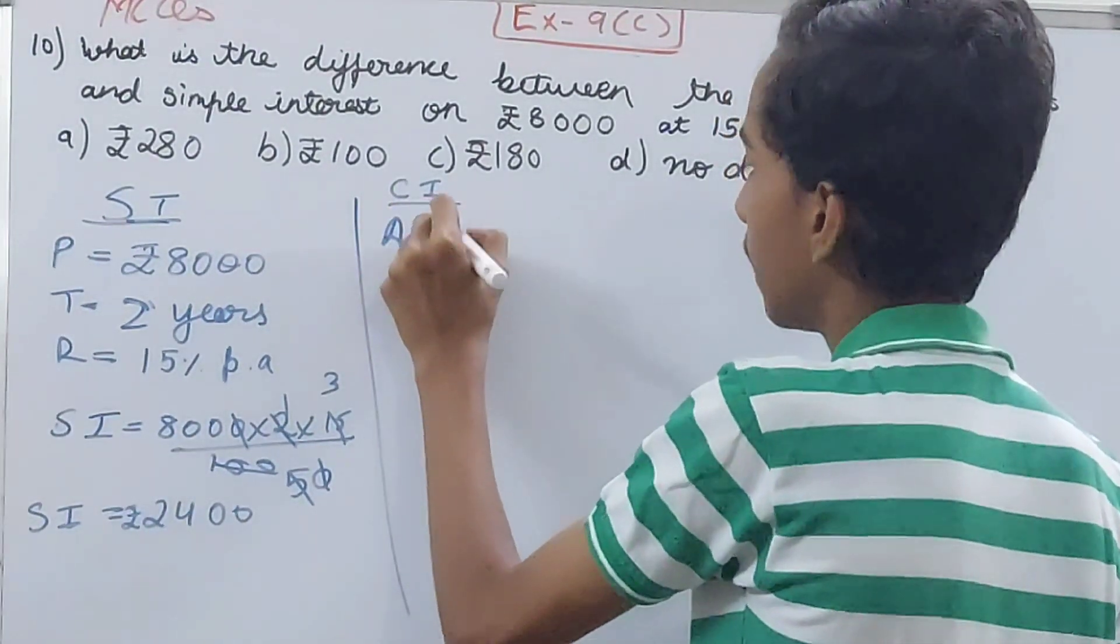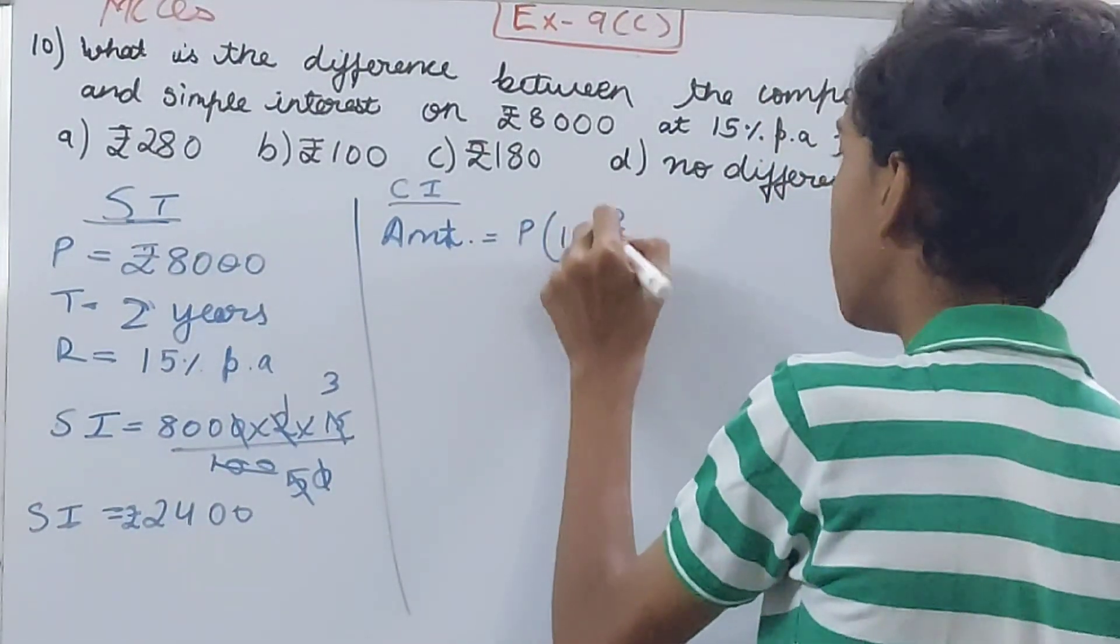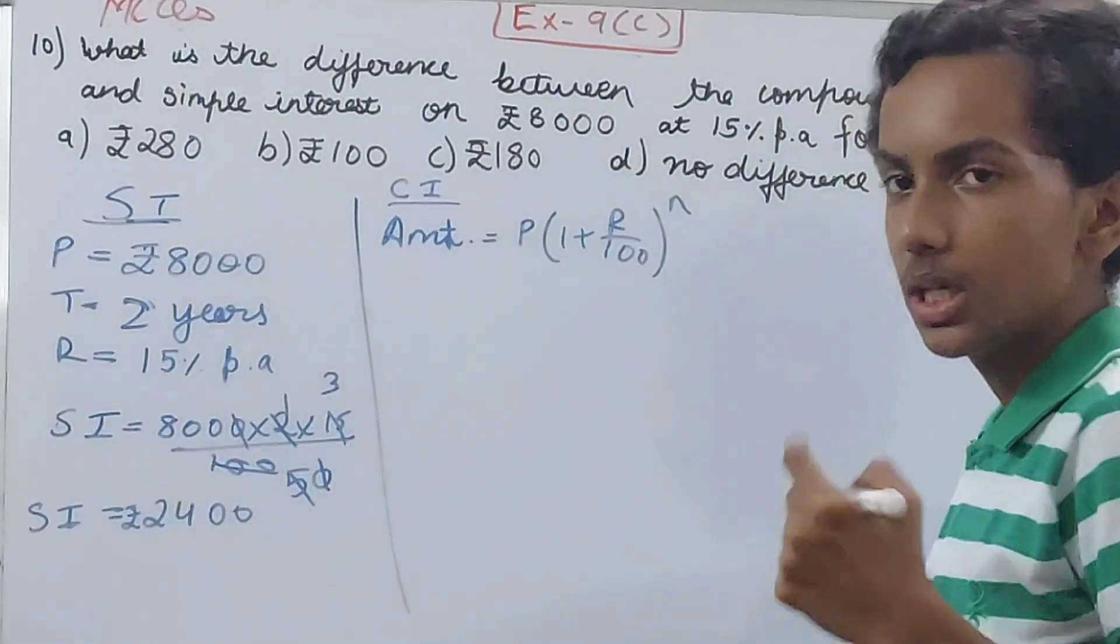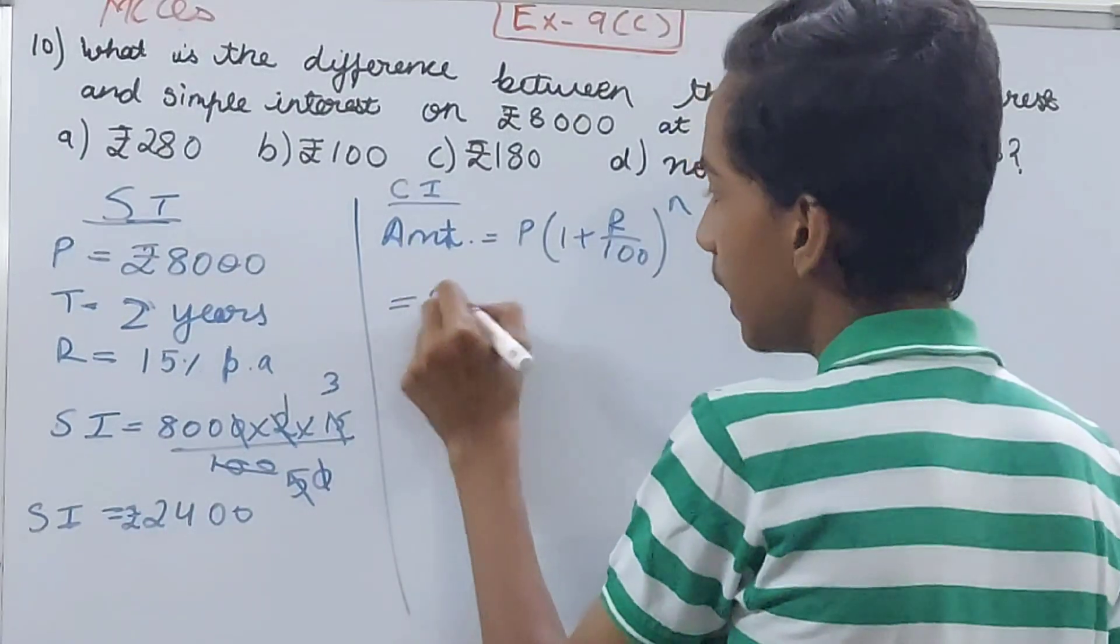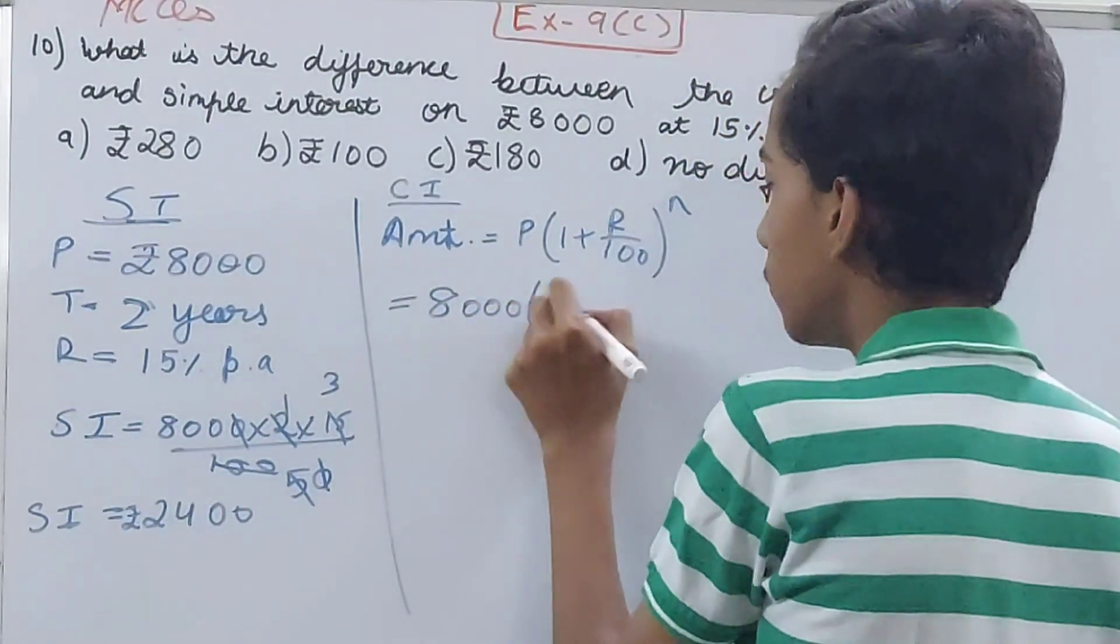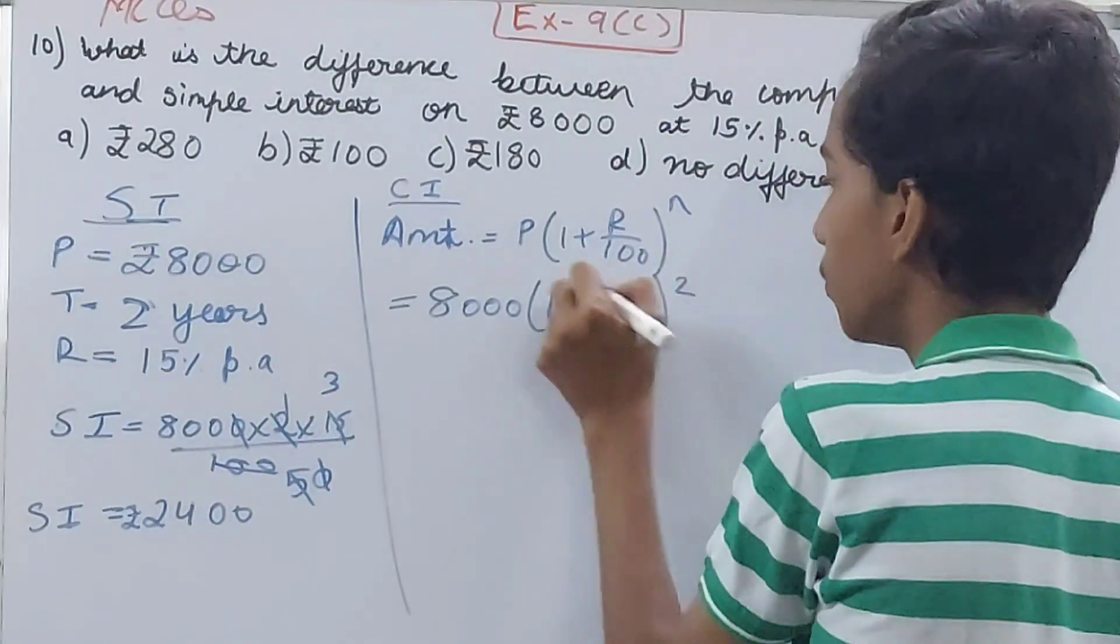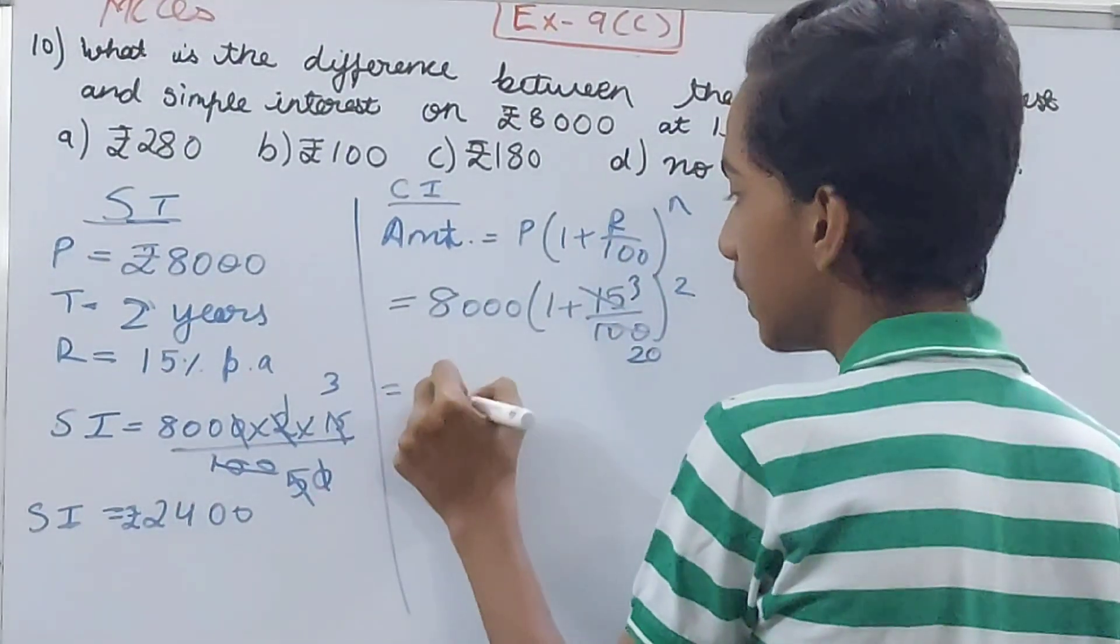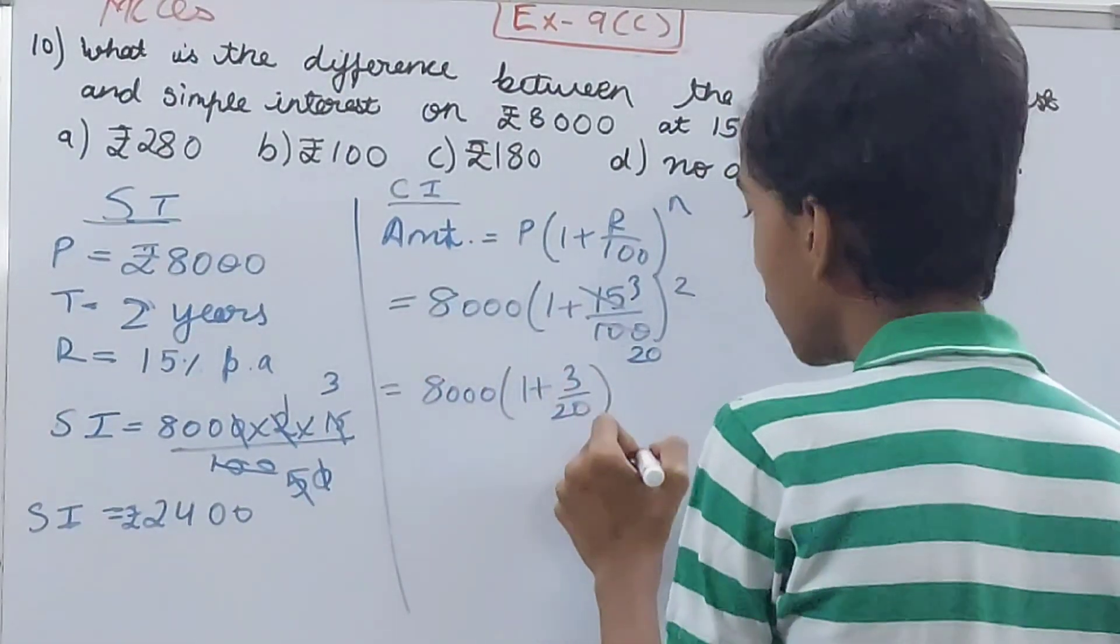Amount equals P within bracket 1 plus R by 100 whole to the power of n, where time is n. So amount is going to be 8000 into 1 plus 15 by 100 to the power of 2. Cancel this - you have 8000 into 1 plus 3 by 20 whole square.